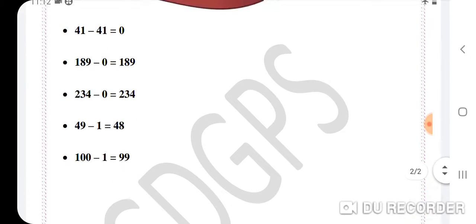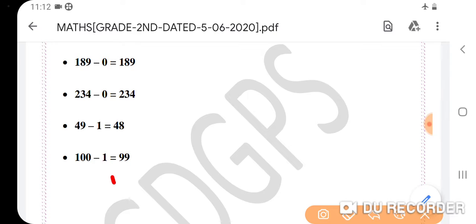Now the last example: 100 minus 1 equals 99. Again, 99 is the predecessor of 100 because one thing has been taken away. So the difference is 99.